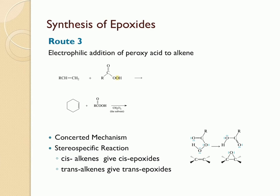Epoxides can also be synthesized by the electrophilic addition of a peroxy acid to an alkene. A peroxy acid has one extra oxygen compared to a carboxylic acid. The commonly used peroxy acid is MCPBA, which is meta-chloroperoxybenzoic acid. There are two important products obtained in this reaction: one is the epoxide and the other is a carboxylic acid.